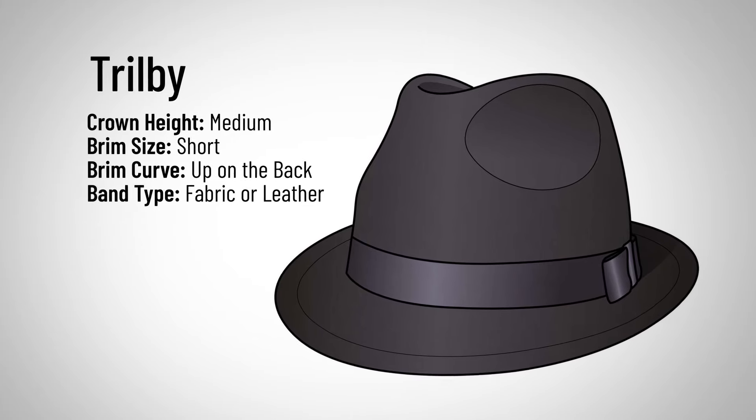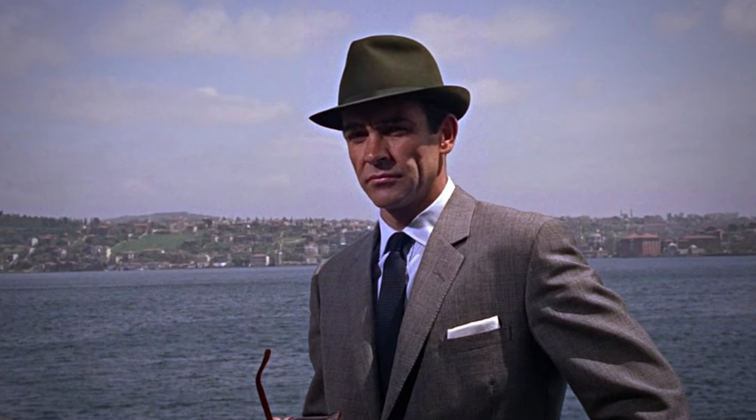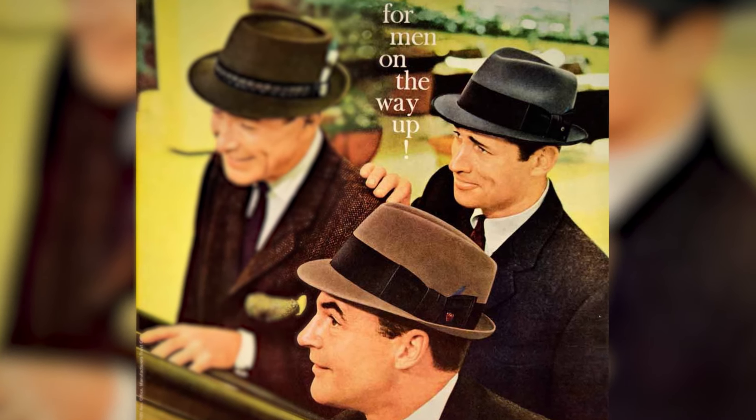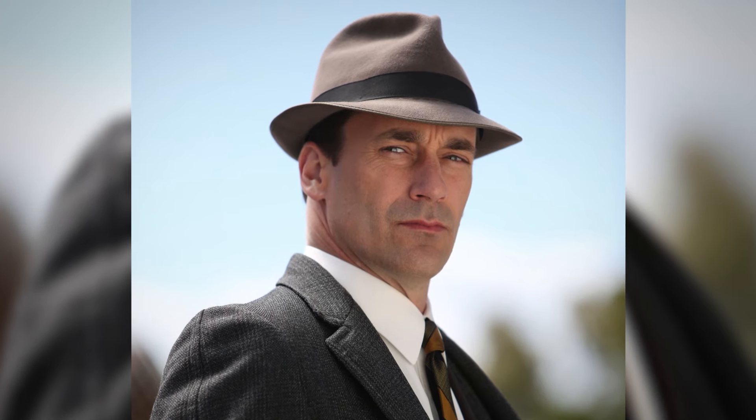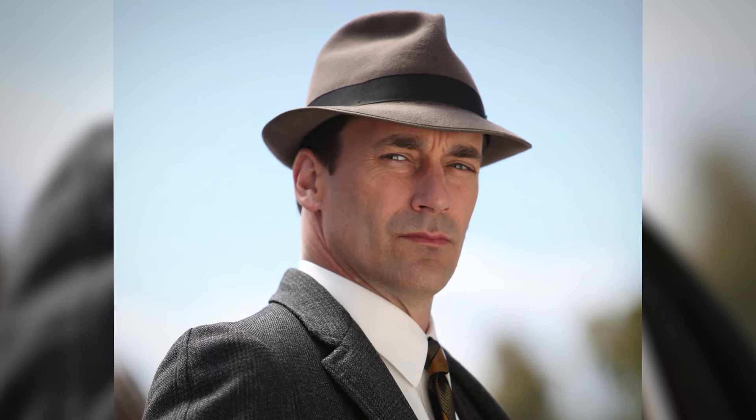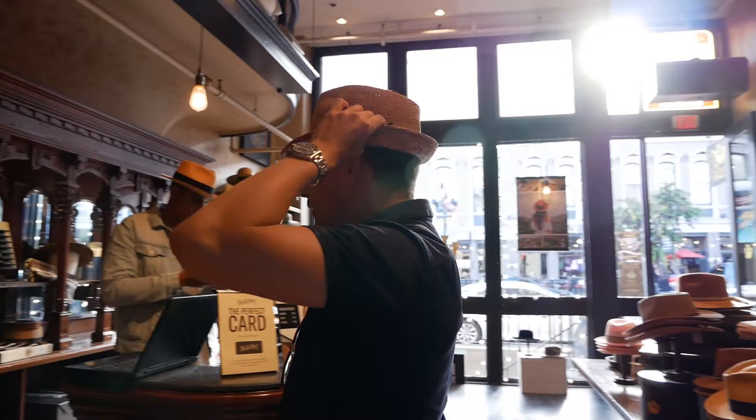Very similar to the fedora, we have the trilby. The only difference is the length of the actual brim. The brim started getting even smaller — we're talking about an inch, sometimes even three-quarters of an inch, maybe an inch and a half at most in the front. It's a small difference in that brim, but all of a sudden we've got a very different looking hat. The trilby and the fedora had their heyday from the 1930s to the 1960s. I personally only wear these for hot weather because they're much more stylish than a baseball cap and they keep the sun off my head.